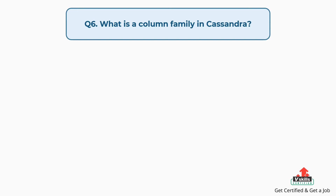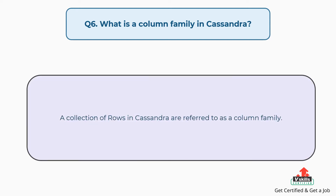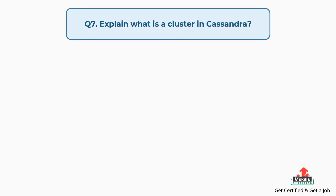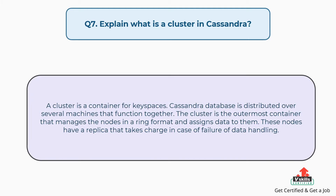Question number six: What is a column family in Cassandra? A collection of rows in Cassandra is referred to as a column family. Question number seven: Explain what is a cluster in Cassandra? A cluster is a container for keyspaces. Cassandra database is distributed over several machines that function together. The cluster is the outermost container that manages the nodes in a ring format and assigns data to them. These nodes have a replica that takes charge in case of failure of data handling.